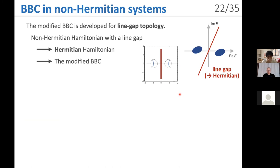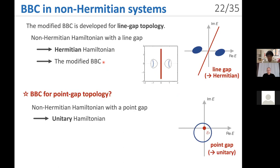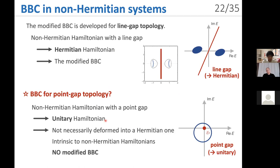The modified bulk-boundary correspondence is developed only for line gap topology. In this case, a non-Hermitian Hamiltonian is deformable to a Hermitian Hamiltonian, so it is natural that we have the modified bulk-boundary correspondence. For point gap topology, on the other hand, a non-Hermitian Hamiltonian is deformable to a unitary Hamiltonian and is not necessarily deformable to a Hermitian Hamiltonian. This is why point gap topology is intrinsic to non-Hermitian Hamiltonians, and we have no modified bulk-boundary correspondence in this case.